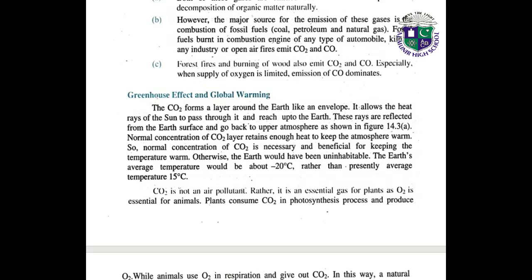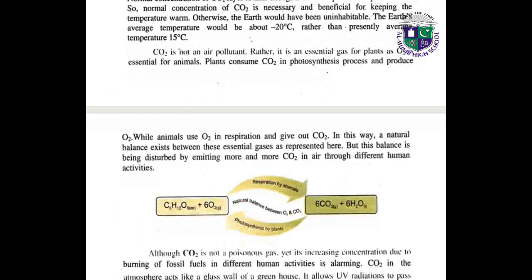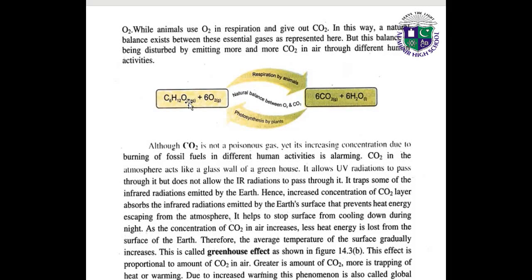What are greenhouse effects and global warming? Carbon dioxide forms a layer around the earth like an envelope. It allows the heat rays of the sun to pass through it and reach the earth. These rays are reflected from the earth's surface and go back to the upper atmosphere. Normal concentration of the carbon dioxide layer retains enough heat to keep the atmosphere warm. Normal concentration of carbon dioxide is necessary and beneficial for keeping the temperature warm; otherwise the earth would have been uninhabitable. Carbon dioxide is not an air pollutant; rather it is an essential gas for plants because photosynthesis occurs in the presence of carbon dioxide, while animals use oxygen in respiration and give out carbon dioxide.